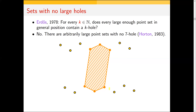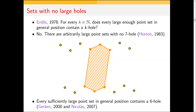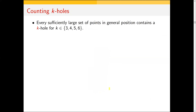Interestingly, these Horton sets have plenty of six-holes. For a long time it was unknown whether every sufficiently large point set always contains a six-hole. This was eventually settled independently by Gerken and Nicolas, who proved that every sufficiently large set of points in general position does contain a six-hole. To summarize: k-holes are guaranteed for k at most six, and for k at least seven there exist arbitrarily large point sets with no k-hole.